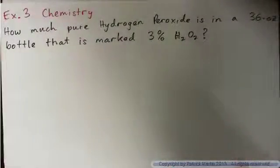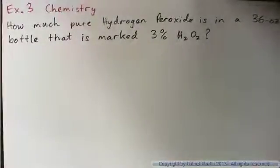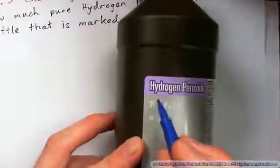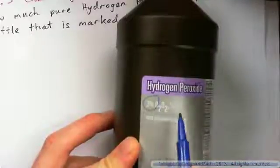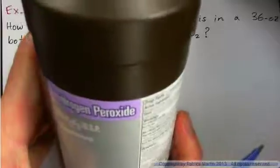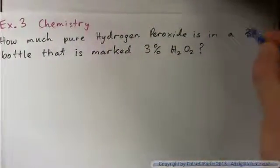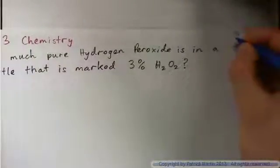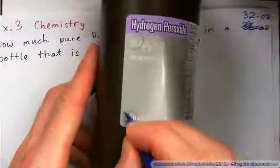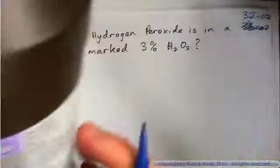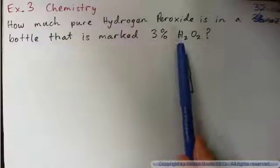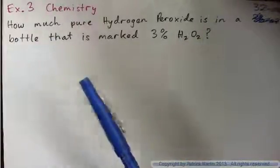Example three: hydrogen peroxide. Have you ever seen a hydrogen peroxide bottle? It usually says about 3% on it — 3% hydrogen peroxide. This is a 32-ounce bottle. So how much pure hydrogen peroxide is in this 32-ounce bottle marked 3% H₂O₂?